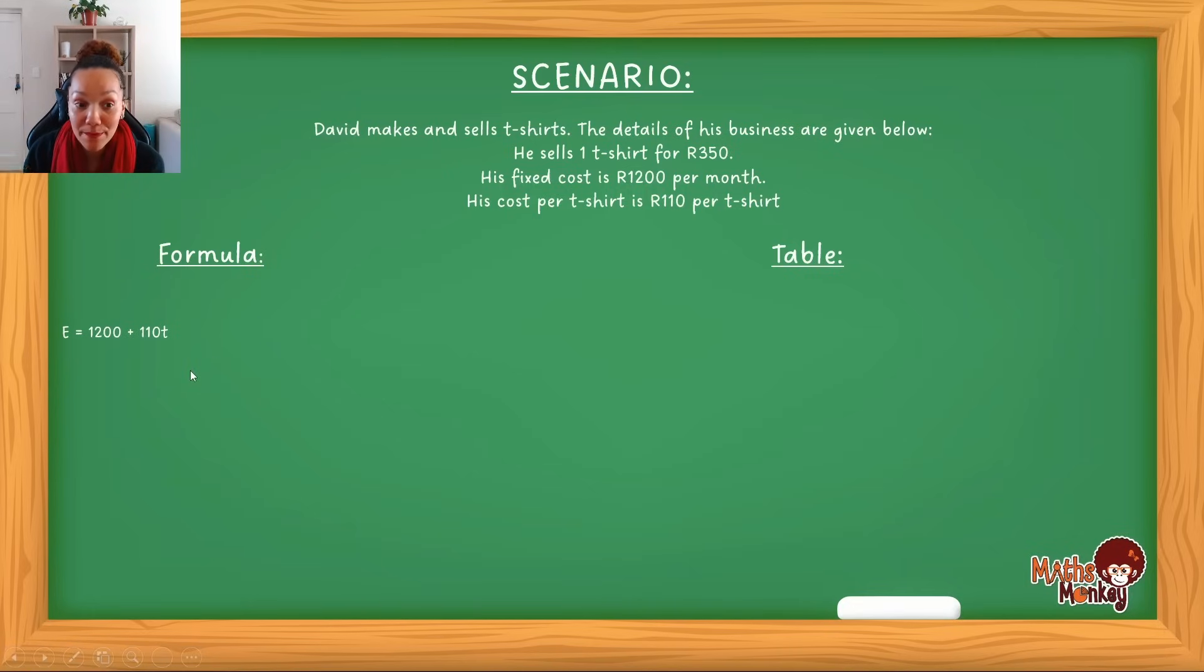Now if I look at my income, my income is then 350t, which means for every t-shirt I sell, I will get 350 rand. Now take note, when there's a letter next to a value, this actually means multiplication. So both of this actually means 350 times t, and this is 110 times t. Now to find our break even point, we are going to make these equations equal to each other.